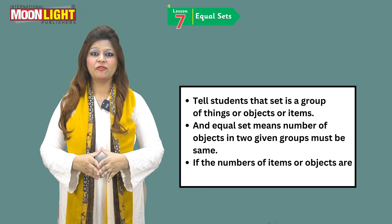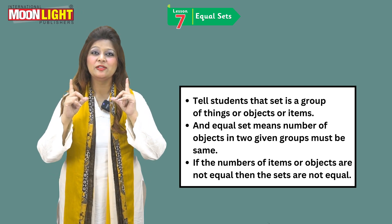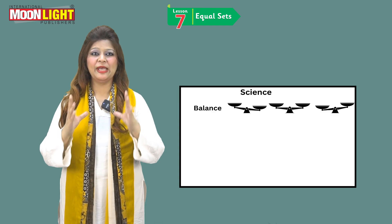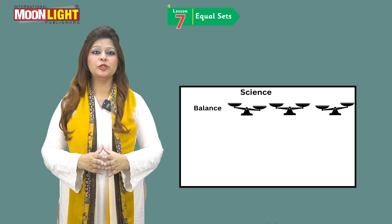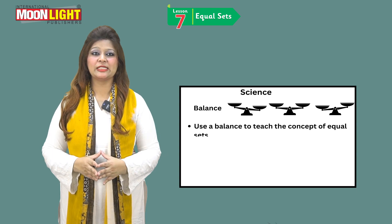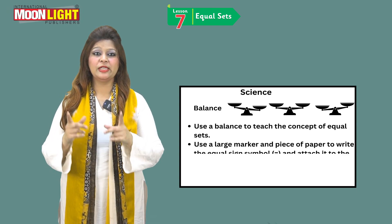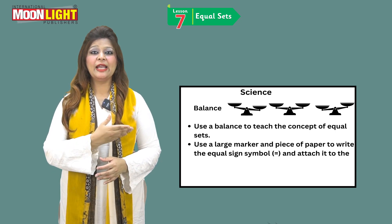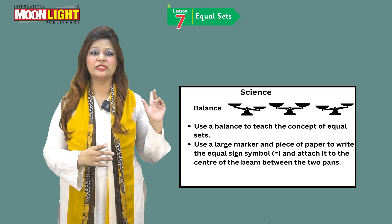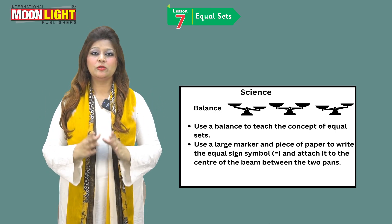If the number of items or objects are not equal, then the sets are not equal. For the science activity — this is an interesting balance activity — you are going to use a balance to teach the concept of equal sets. Use a large marker and a piece of paper to write the equal symbol and attach it with the center of the beam between the two pans.